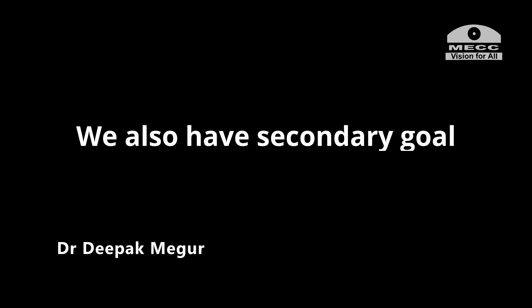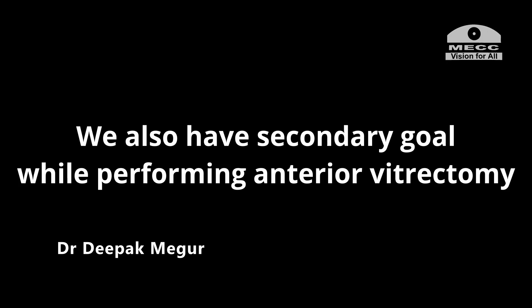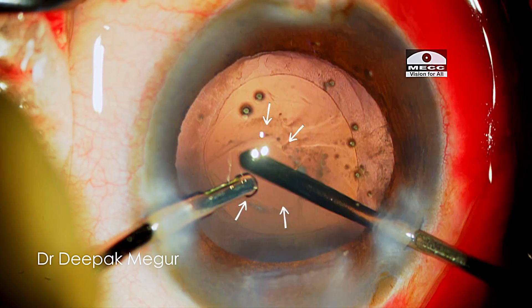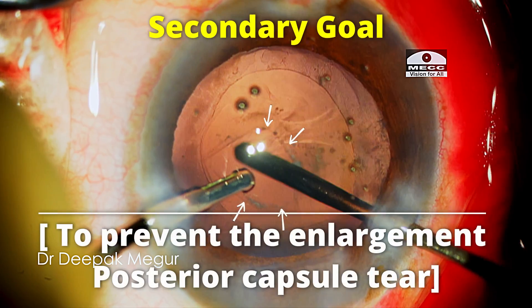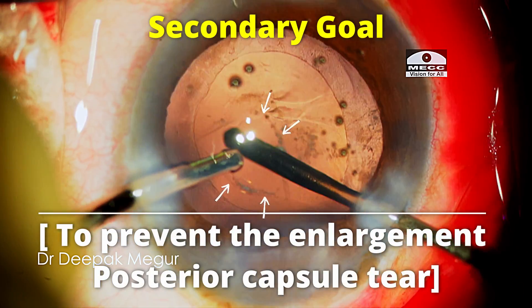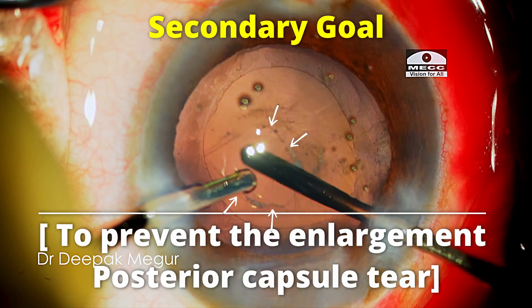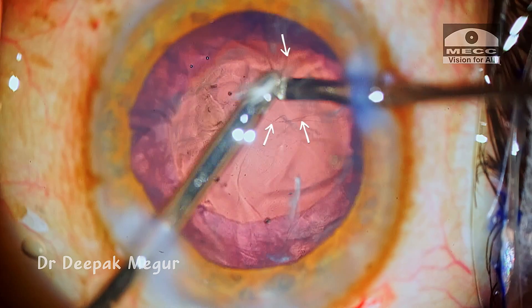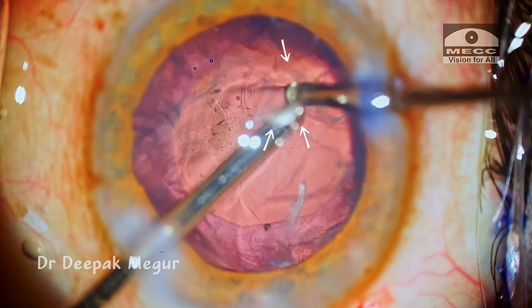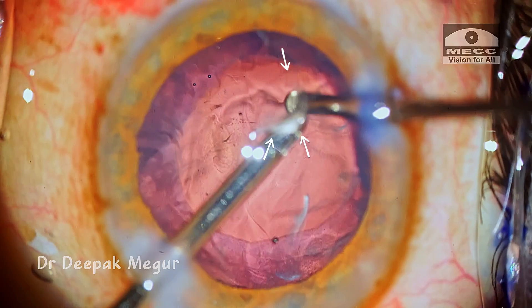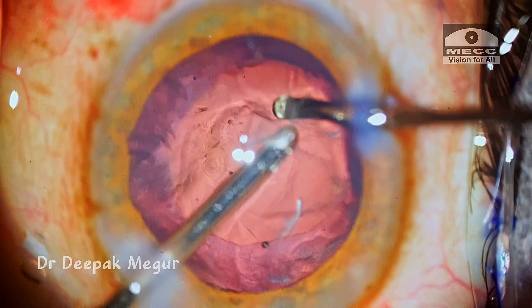We also have a secondary goal while performing anterior vitrectomy: to prevent the enlargement of the posterior capsule tear, provided it is still small, so that it gives us an opportunity to implant the lens into the bag.